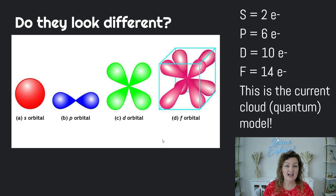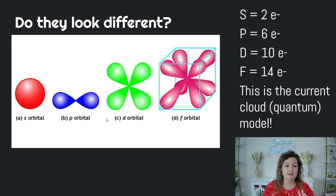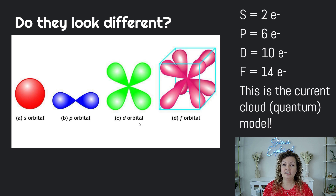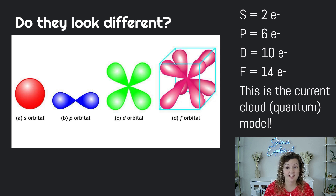Now do they look different from one another? Absolutely, they sure do. So our S orbital is kind of just like a sphere. The P orbital is kind of like the infinity sign a little bit, and the D orbitals start to get a little bit more complex — almost overlapping some P orbitals — and then the F orbitals are even more complex and they come in a variety of shapes as well.